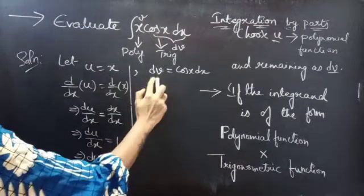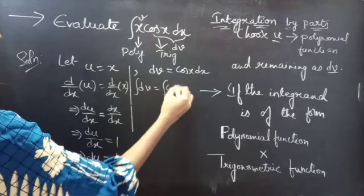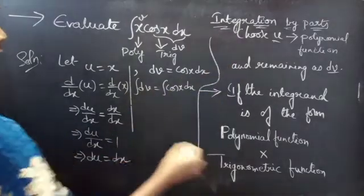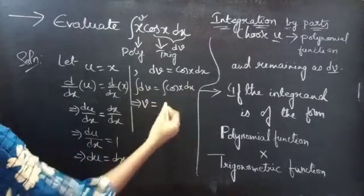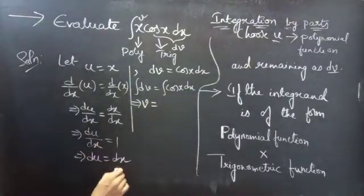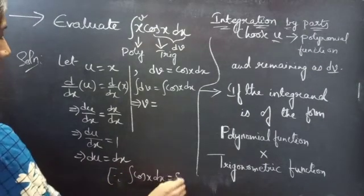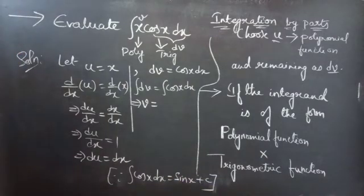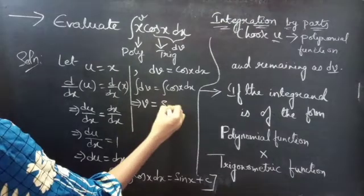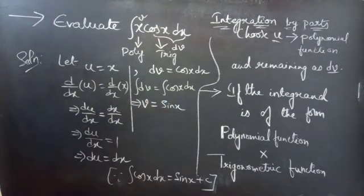Now by integrating on both sides we will get v. Integral dv equals to integral cos x dx. Then we will get v equals to integral cos x dx. Since we know that integral cos x dx equals to sin x plus constant c, we will not write c here. We will just write v equals to sin x.